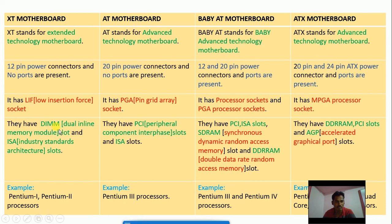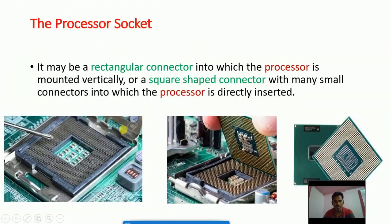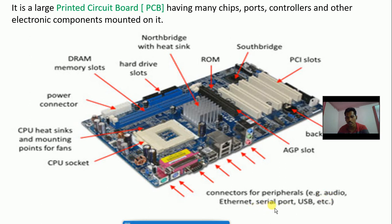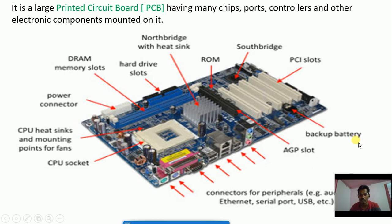Now for slots: the XT motherboard has DIMM slots (Dual Inline Memory Module) and ISA slots (Industry Standard Architecture). The AT motherboard has PCI slots (Peripheral Component Interface) and ISA slots. Peripherals such as mouse and keyboard connect through these slots. Connectors for peripherals include audio, ethernet, serial port, and USB.